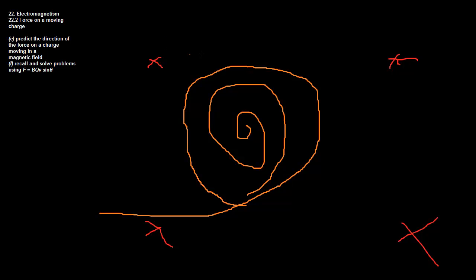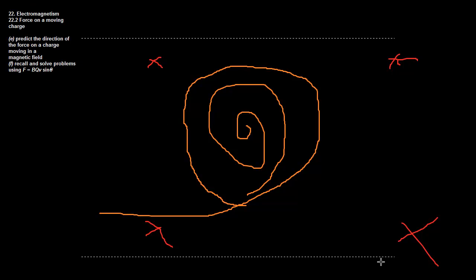If you remember this, this here just comes from our predict the direction, so that's what we just did with Fleming's left hand rule. So, now, this part here, recall and solve problems using F equals BQV. Alright, so this seems relatively simple. If you remember our original equation, which is our grand equation for all magnetic fields, it was this, right? V cross product B.